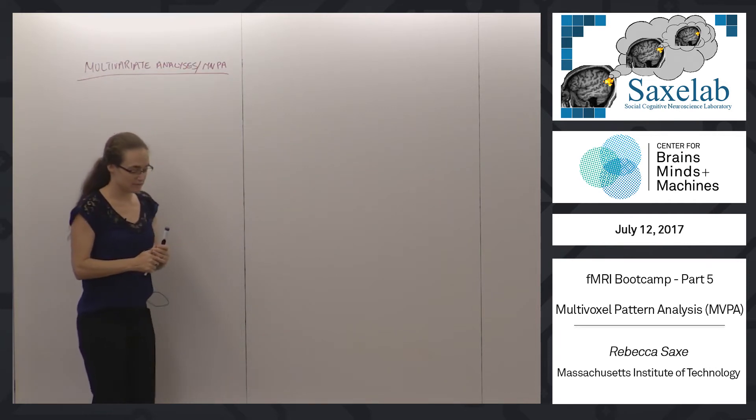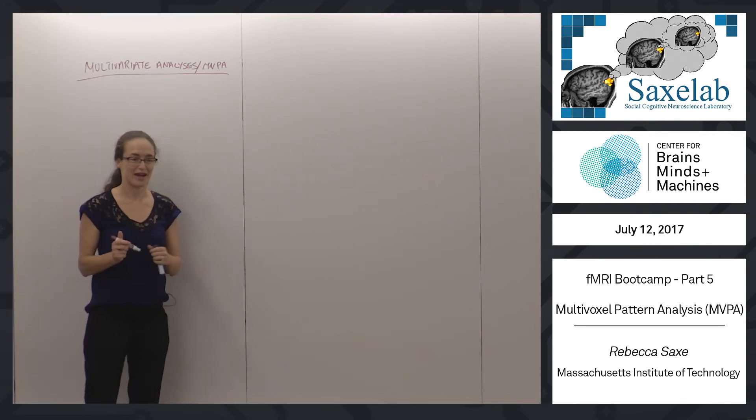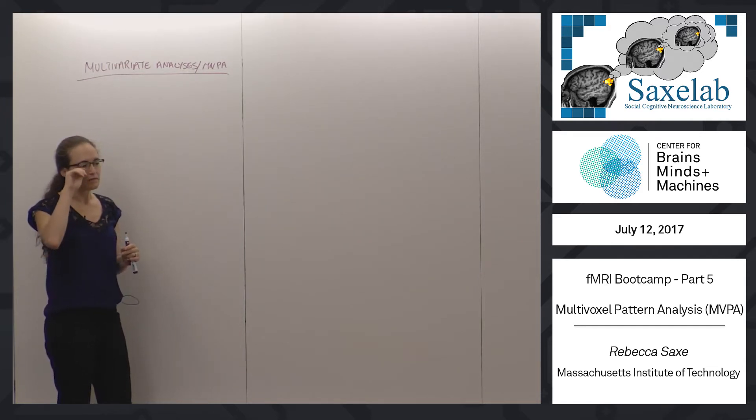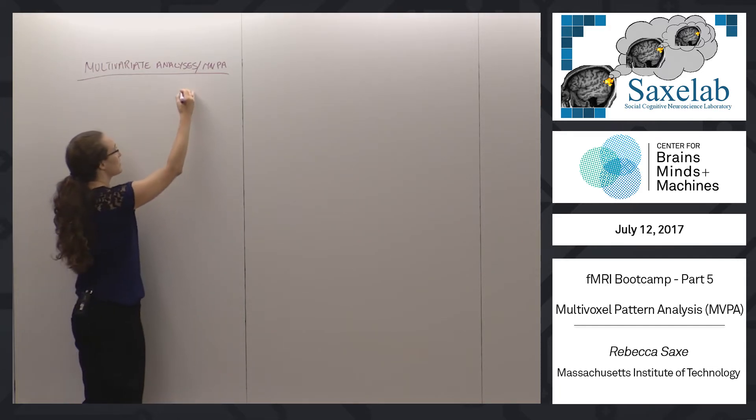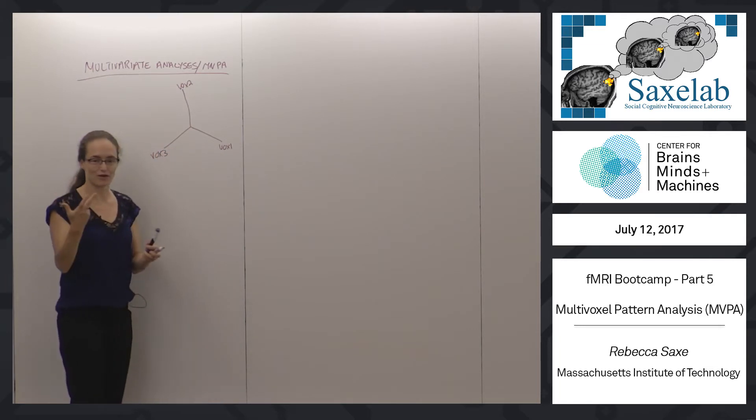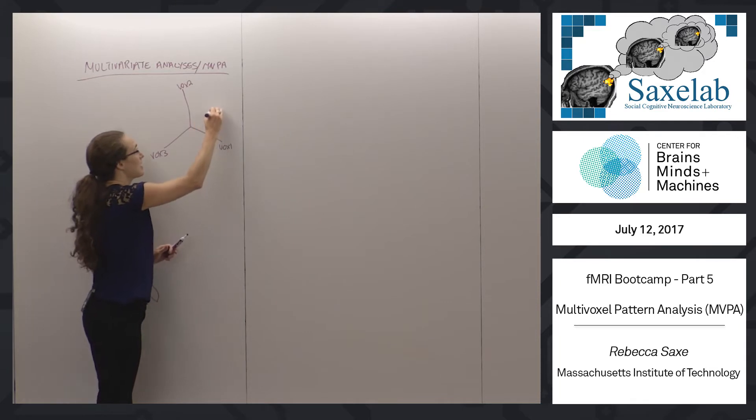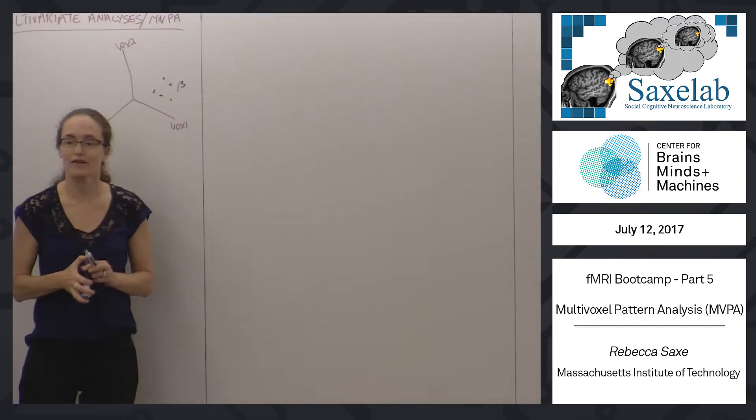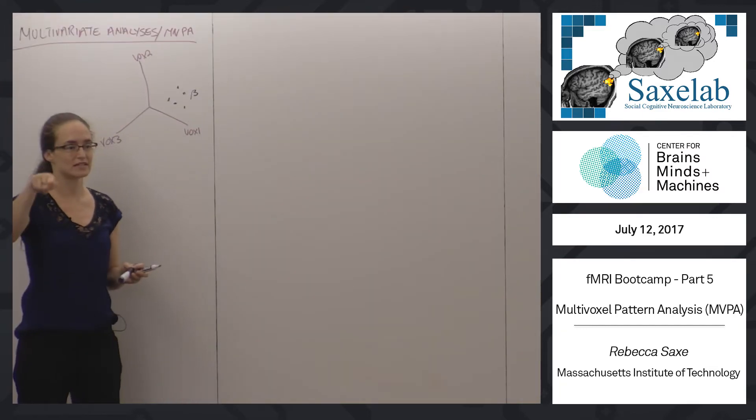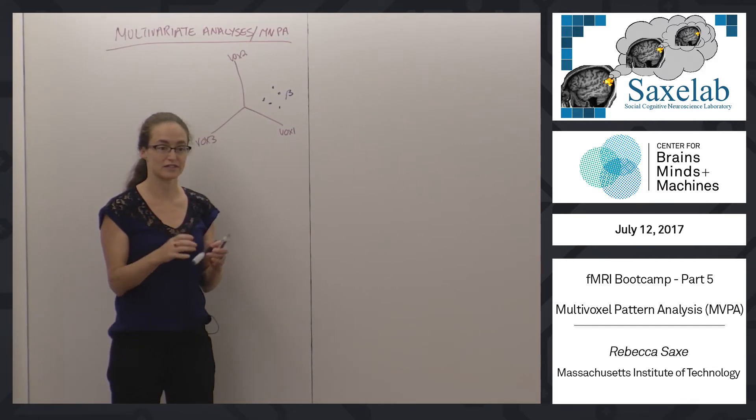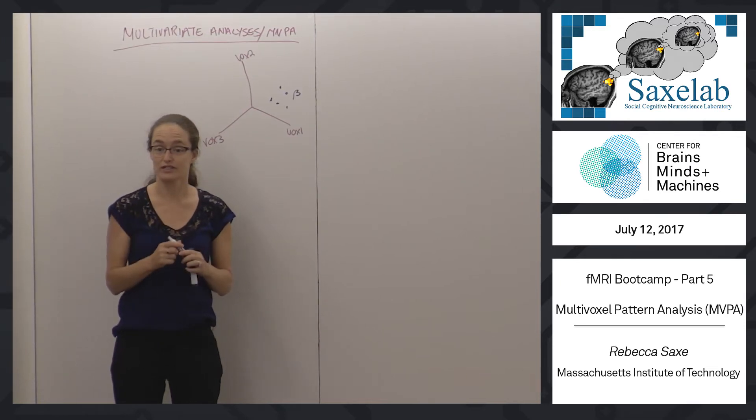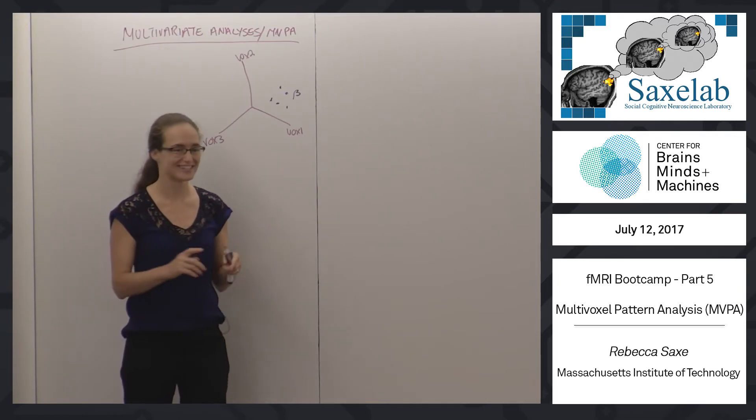Okay, so we're going back to multivariate or multivoxel pattern analyses. The core idea that we talked about last class is that we can think of fMRI data in a new format, a different mathematical way to think about the data we collect, where each beta that we measure for a given condition we can now think of as a point in the space of voxels for some set of voxels.